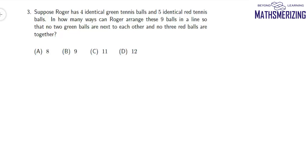Now question number three. It says, suppose Roger has four identical green tennis balls and five identical red tennis balls. In how many ways can Roger arrange these nine balls in a line so that no two green balls are next to each other and no three red balls are together?